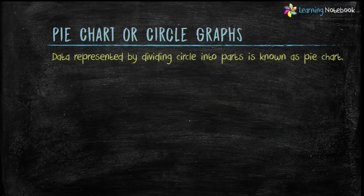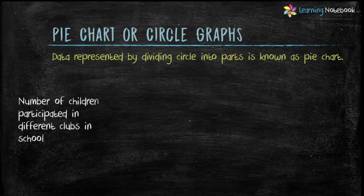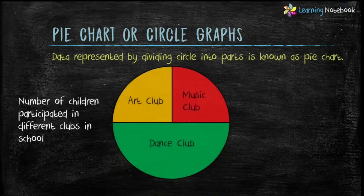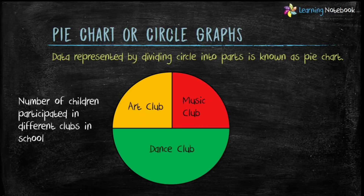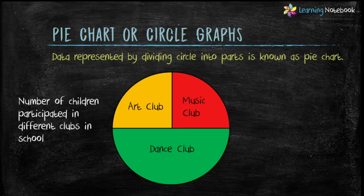Data represented by dividing a circle into parts is known as a pie chart or circle graph. For example, this pie chart shows the number of children who participated in different clubs in a school.